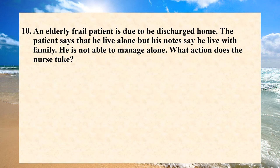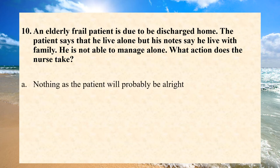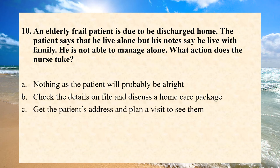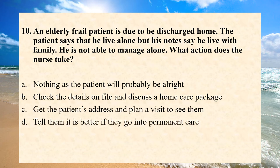An elderly frail patient is due to be discharged home. The patient says he lives alone but his notes say he lives with family, and he is not able to manage alone. What action does the nurse take? A. Nothing — the patient will probably be all right. B. Check the details on file and discuss a home care package. C. Get the patient's address and plan a visit to see them. D. Tell them it is better if they go into permanent care. Answer is B. Check the details on file and discuss a home care package.